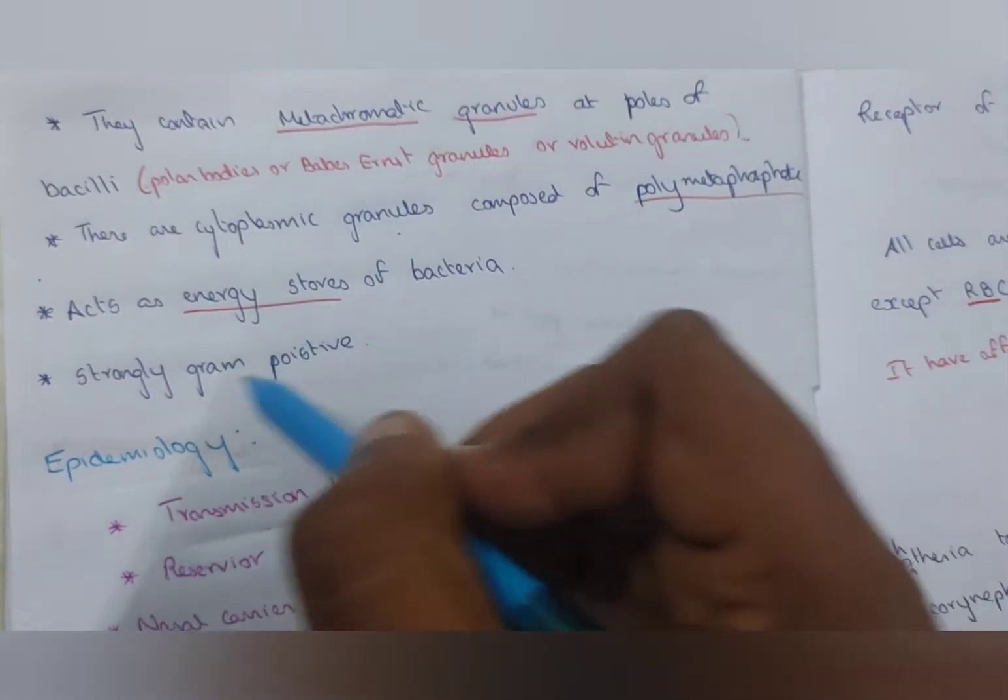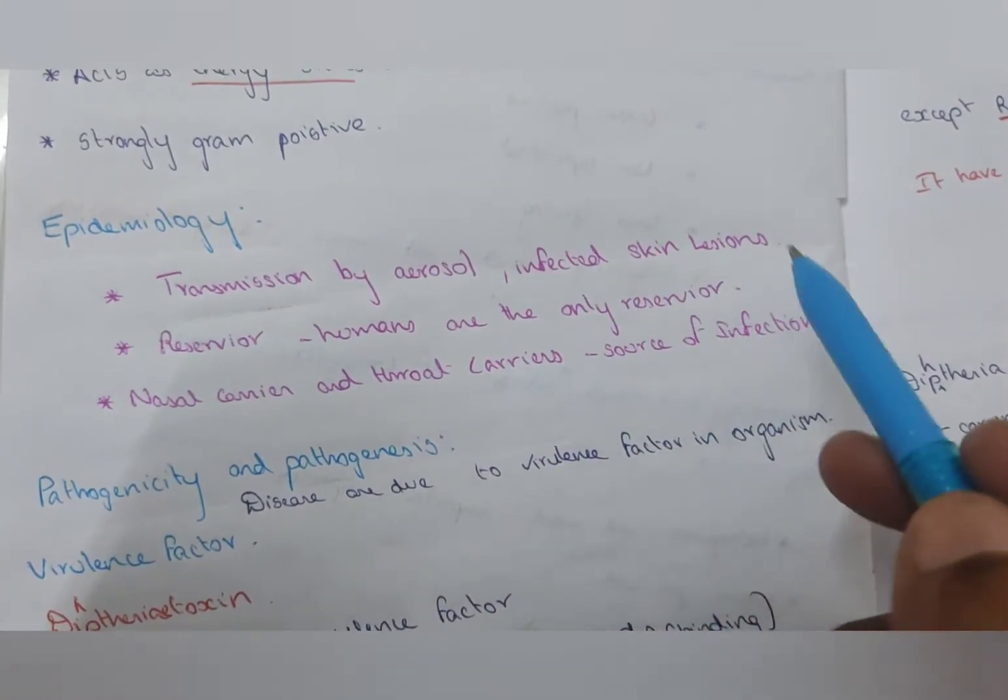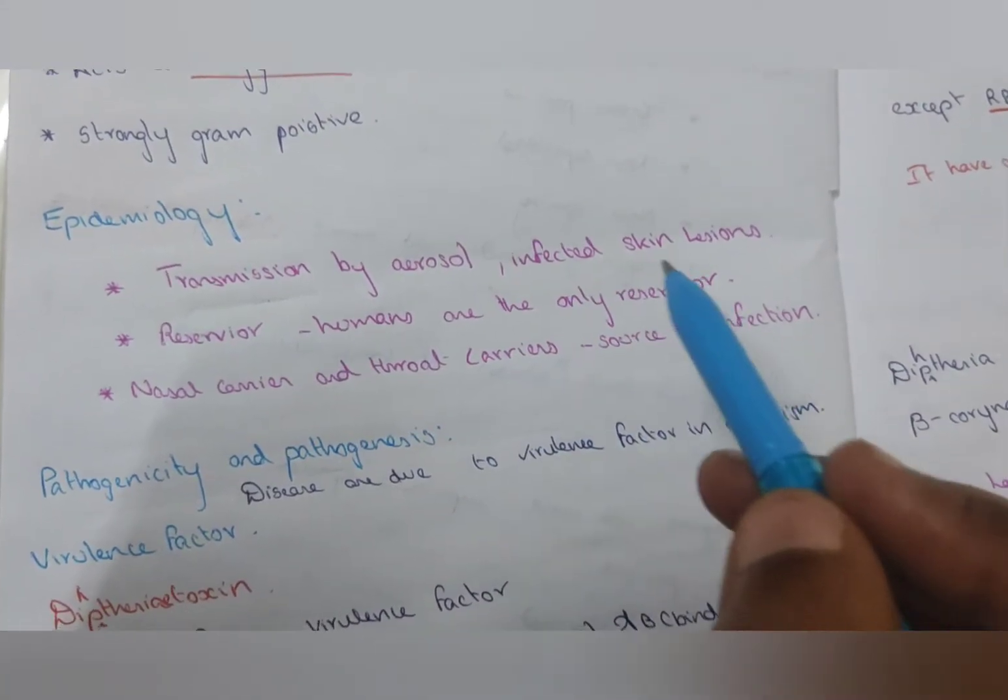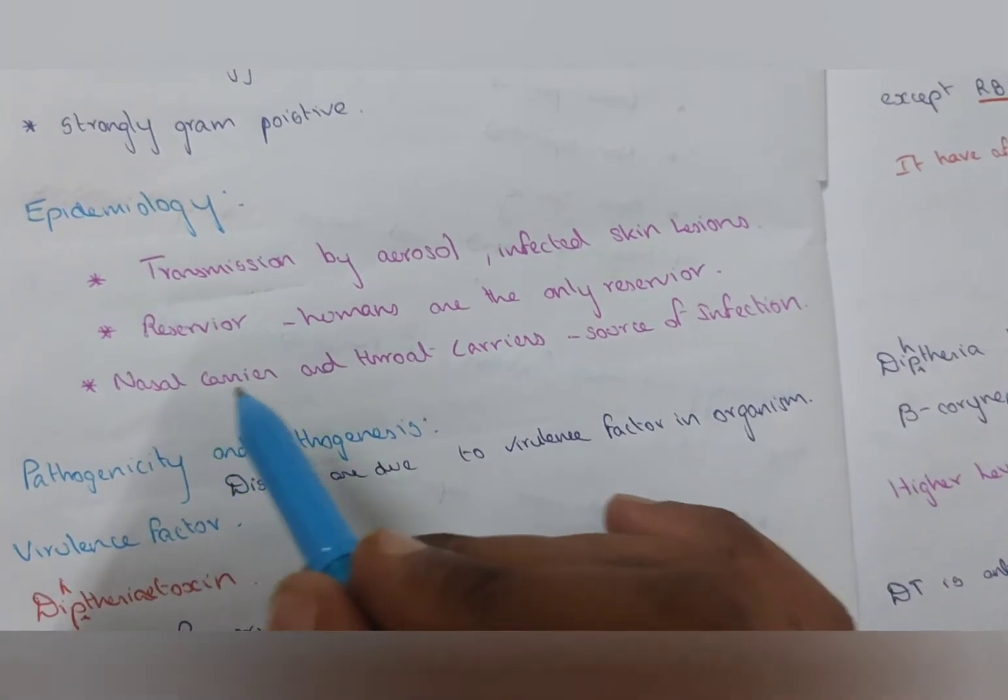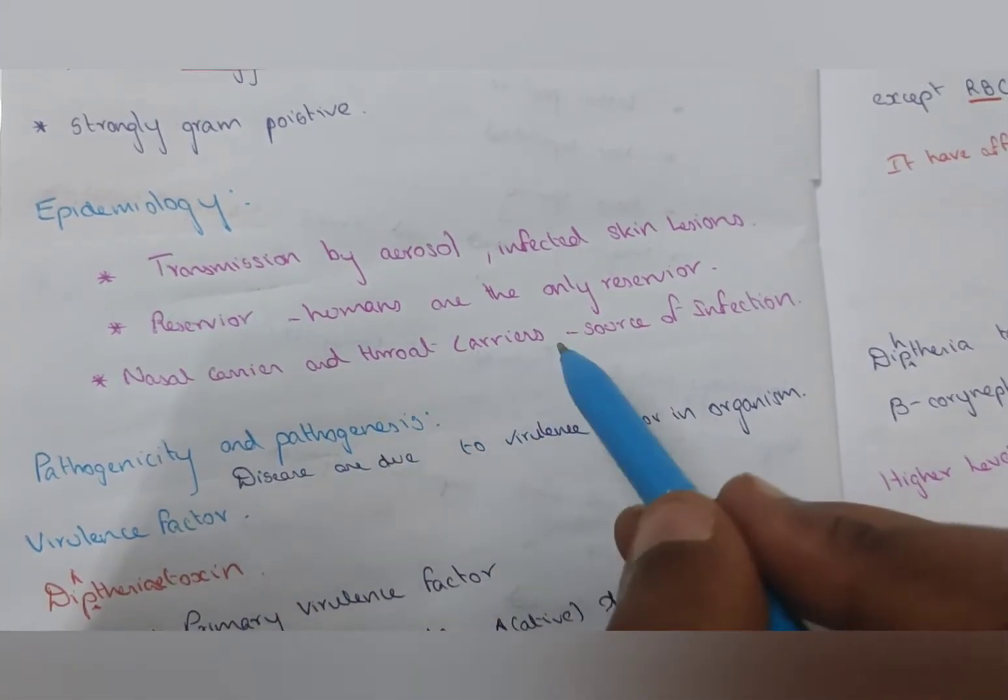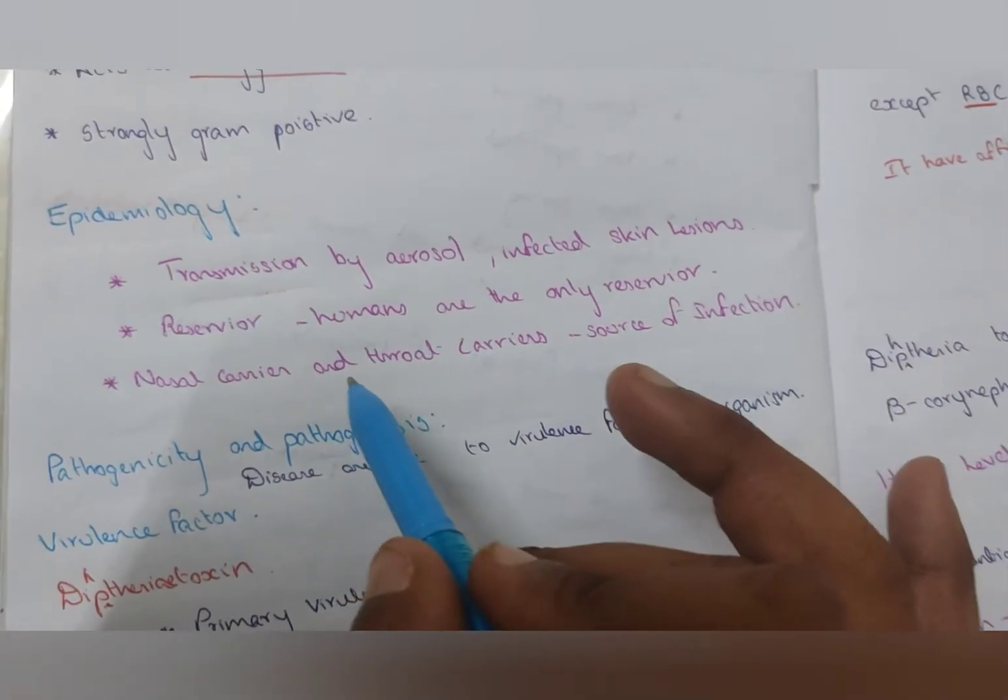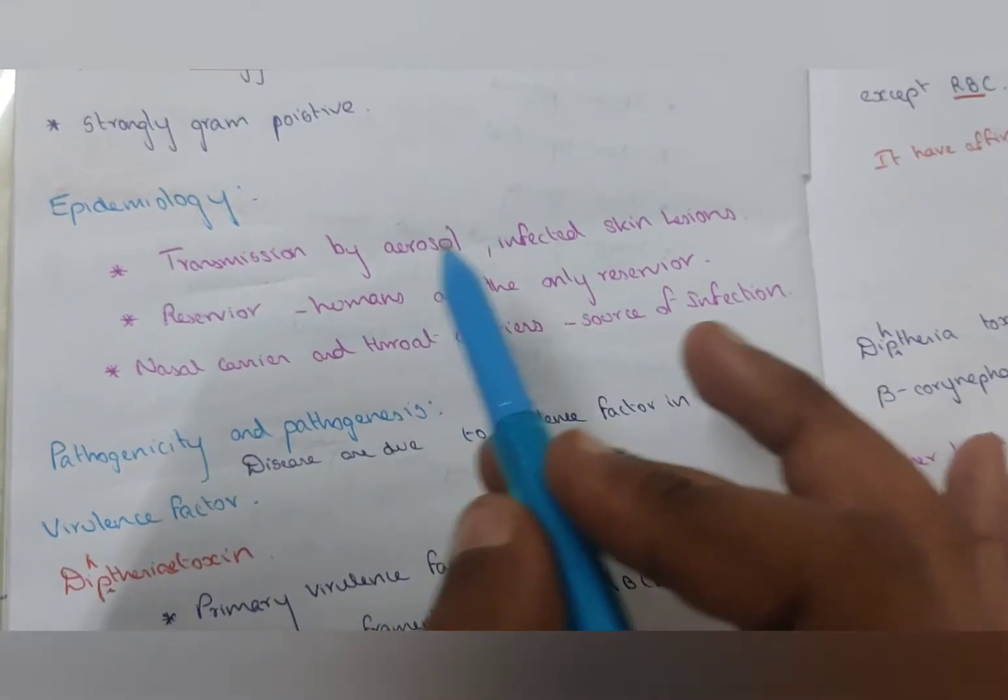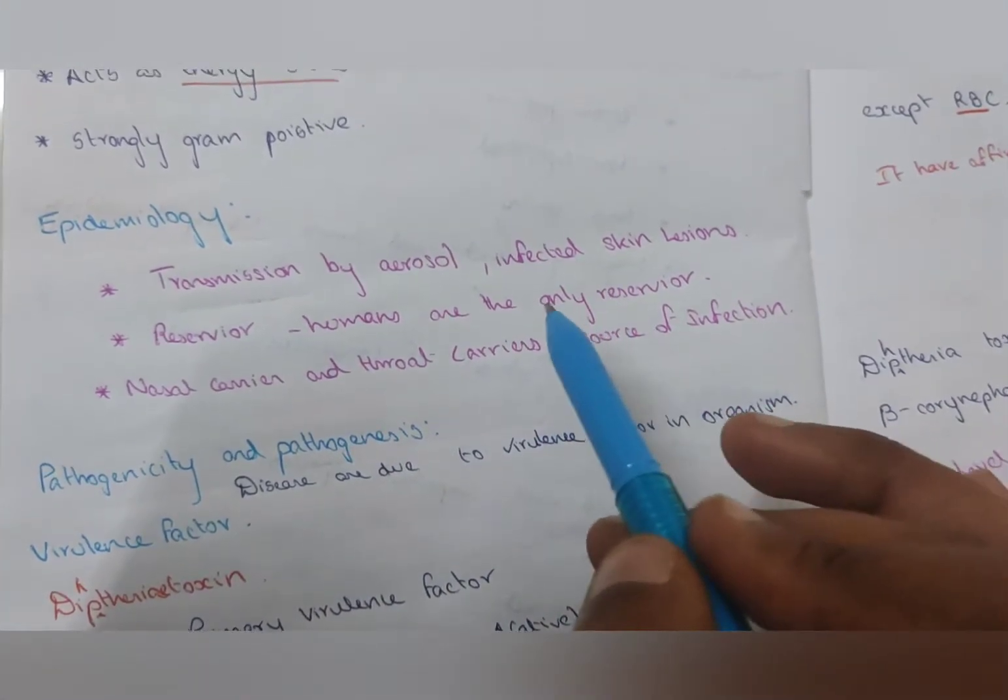Epidemiology: Transmission by aerosol and infected skin lesion. Reservoir: Human is the only reservoir for this Corynebacterium diphtheriae. Nasal carrier and throat carrier are a source of infection. The source of infection is due to the nasal carrier and throat carrier. Transmission by aerosol. It is transmitted by air. Reservoir by human and human only.